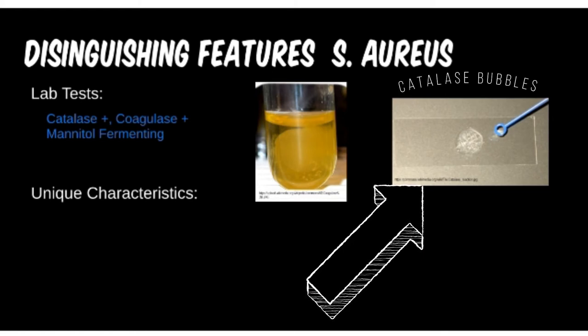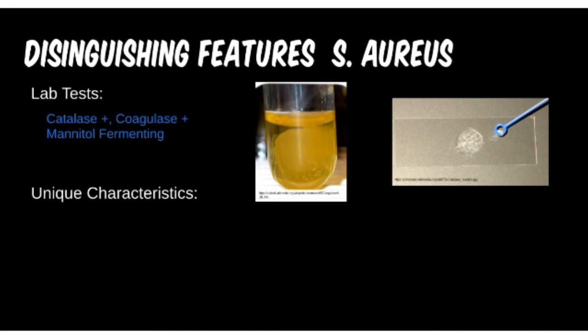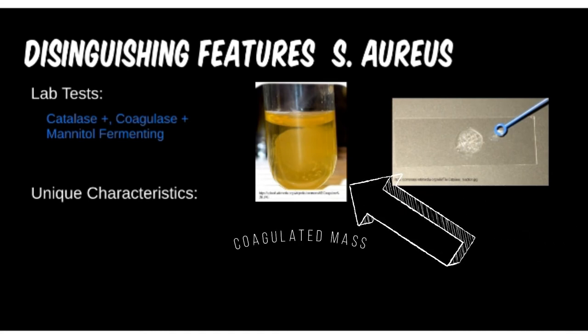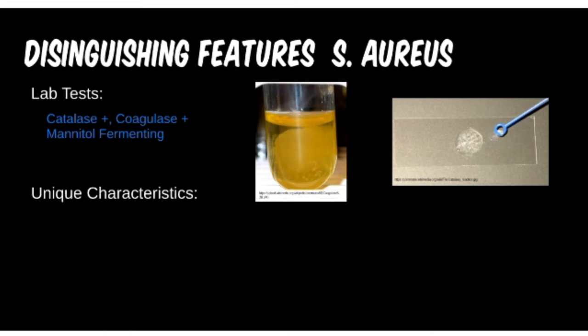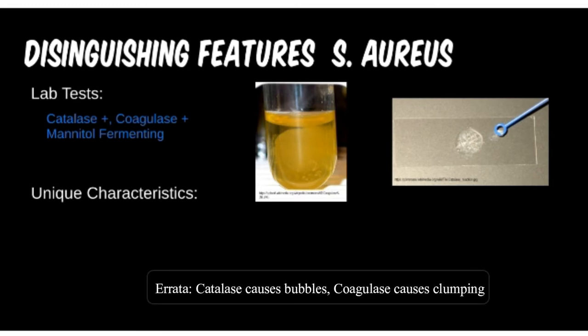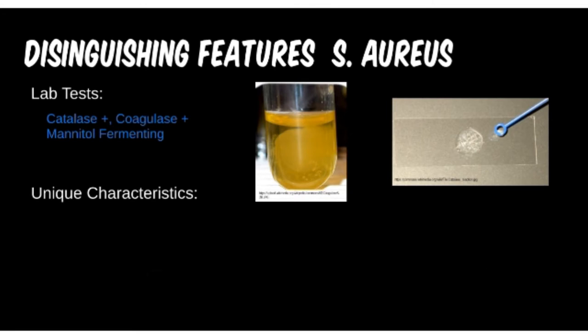Staph aureus also has another powerful enzyme called coagulase. Usually in the coagulation cascade, fibrinogen breaks down to fibrin, but the coagulase prevents coagulation and trapping of the microbe. Both of these enzymes can be tested for. The coagulase test results in bubble formation from the release of gas. Staph aureus is also beta-hemolytic, meaning it causes complete hemolysis.